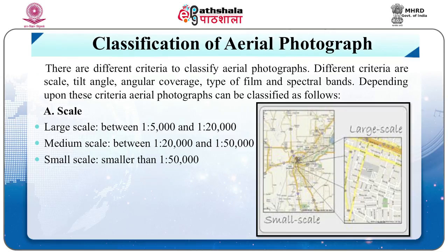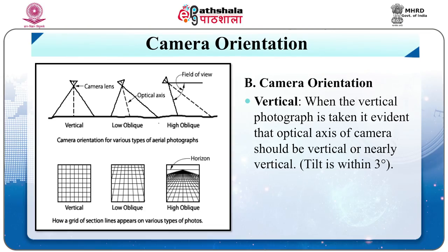Classification by Scale: Large scale — between 1:5,000 and 1:20,000. Medium scale — between 1:20,000 and 1:50,000. Small scale — smaller than 1:50,000. Classification by Camera Orientation: Vertical — when the vertical photograph is taken, it is evident that the optical axis of the camera should be vertical or nearly vertical, that is the tilt is within 3 degrees.